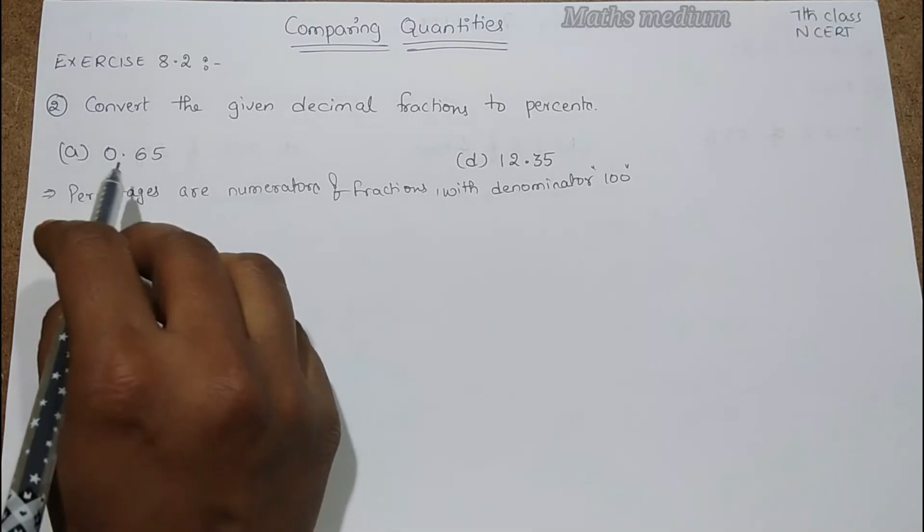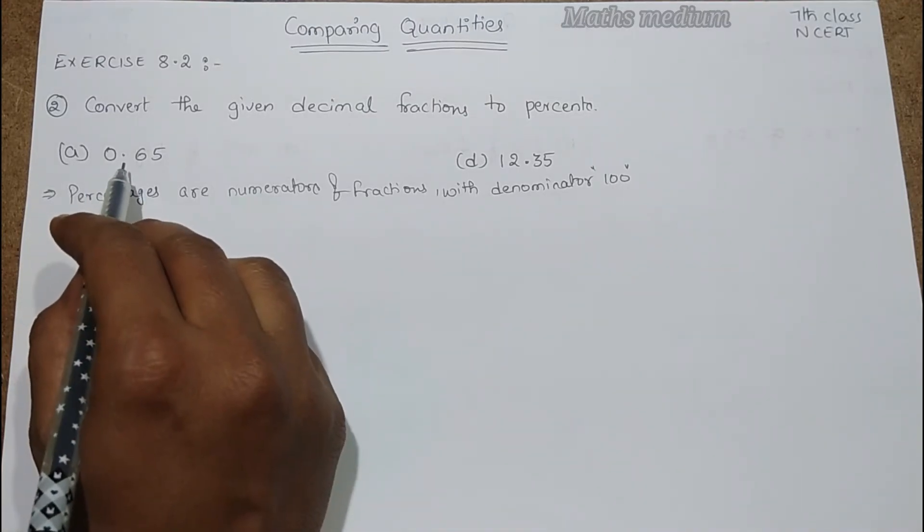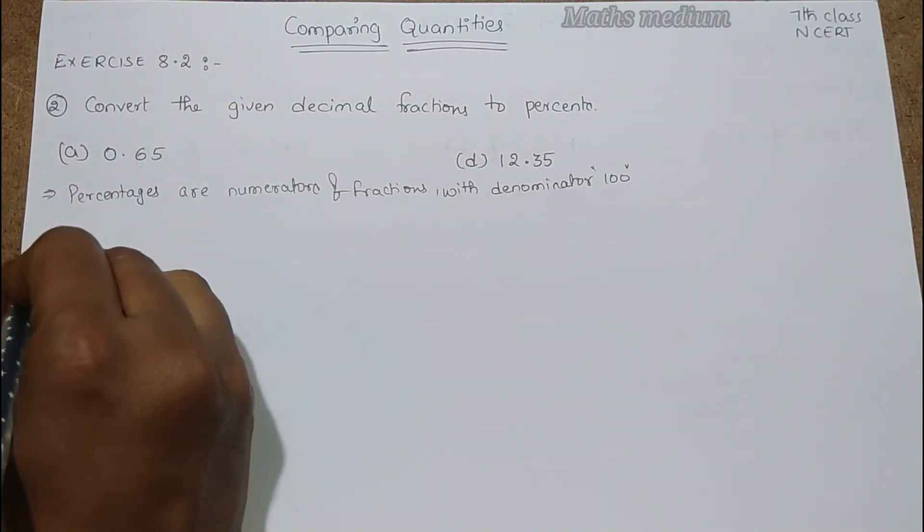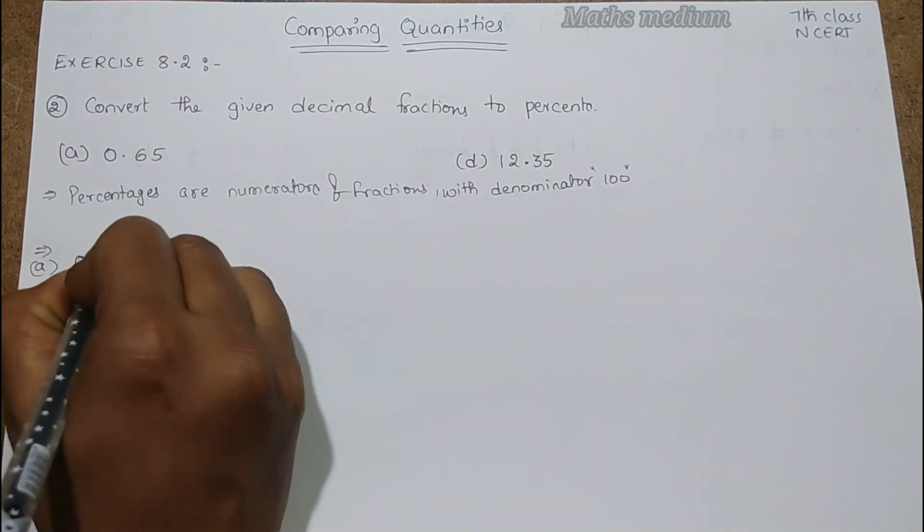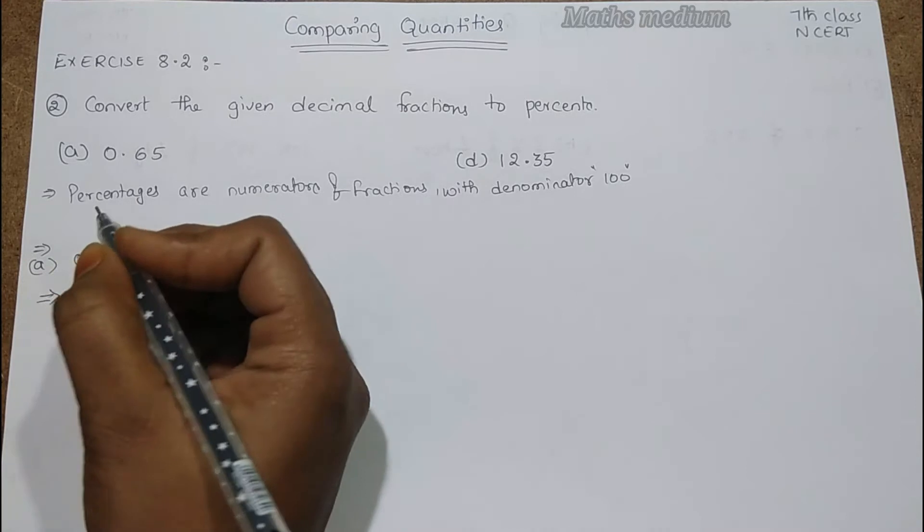So by using this we have to convert decimal fraction to percentages. So let's start here, 0.65. Now convert this into fraction number.